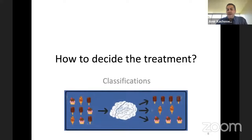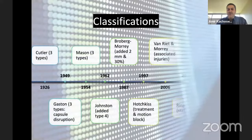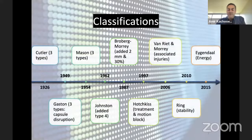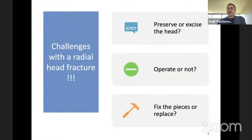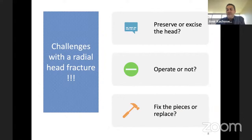Classifications appear to help us make a decision regarding radial head fractures. There are multiple classification systems throughout history, starting from 1926 with the last one in 2015. Each one accounted for accompanying or associated injuries and the amount of displacement to make a classification, which makes it easier for decision-making regarding treatment. The challenges we face are: preserve the head or excise, operate or non-operative, and if operating, do we fix or replace the head?